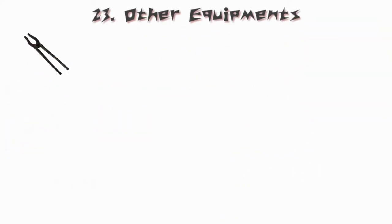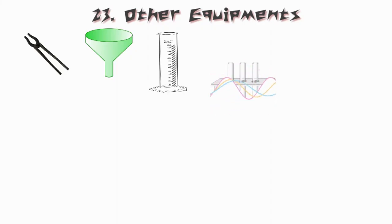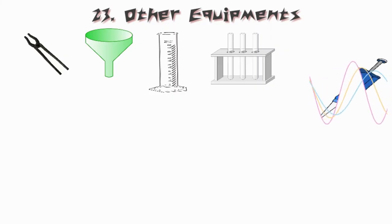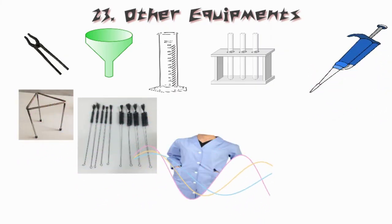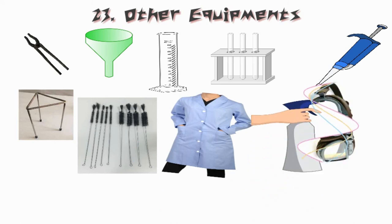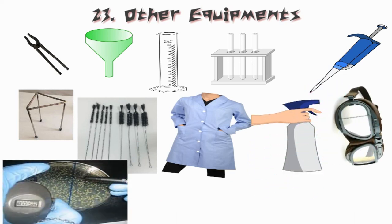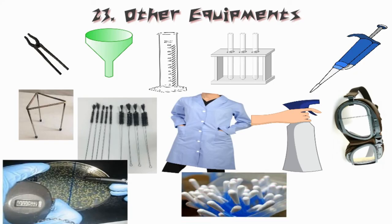Other Equipments: Tongs, Funnel, Measuring Cylinder, Test Tube Rack, Micro Pipette, Tripod, Wire Brush, Lab Coat, Disinfectant Spray, Goggles, Colony Counter, Cotton Swab.